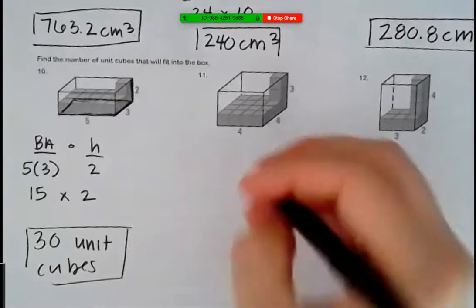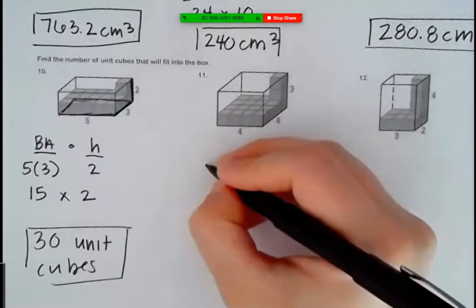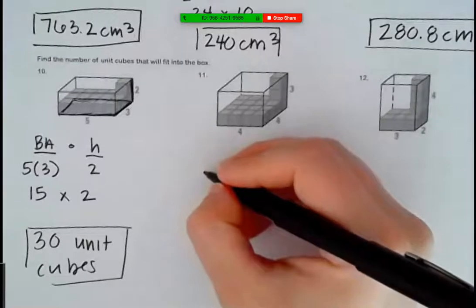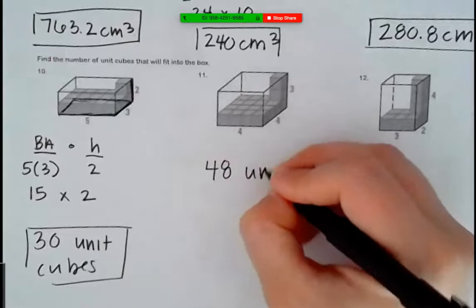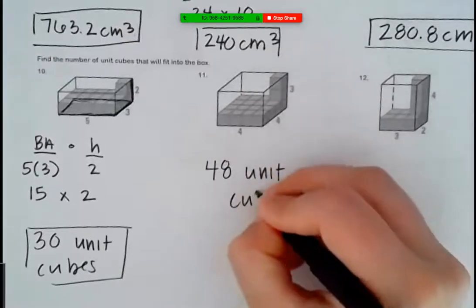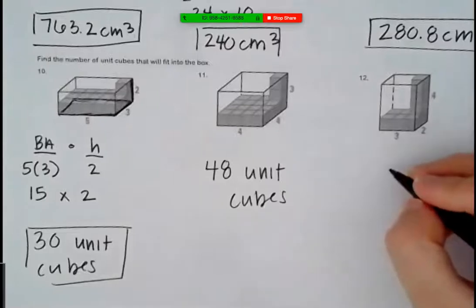What did you guys get on 11? 48. Good job, 48 unit cubes. What about on 12? 24. Are we okay with 24? I agree.